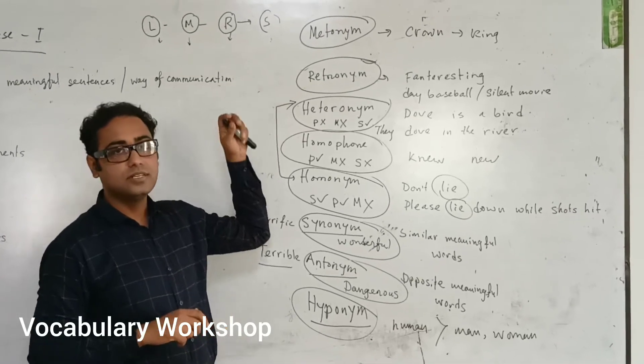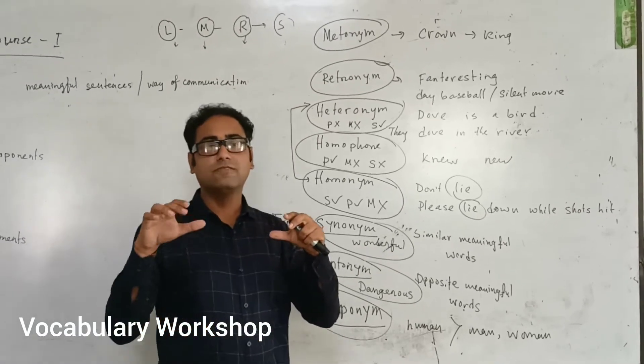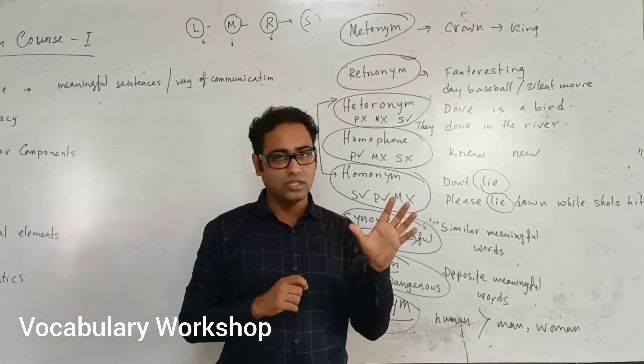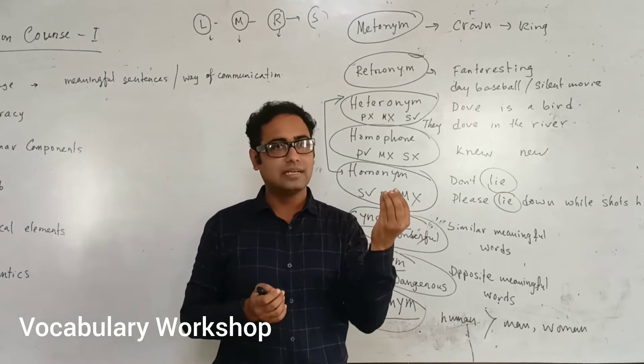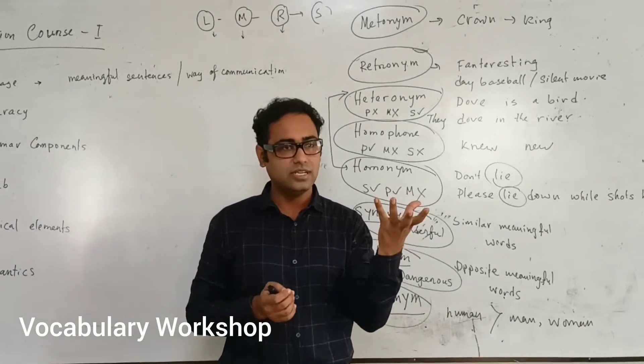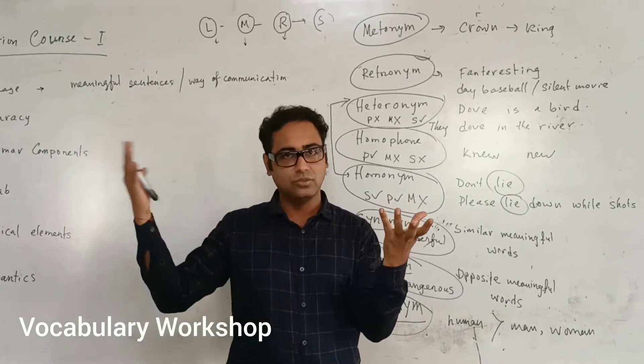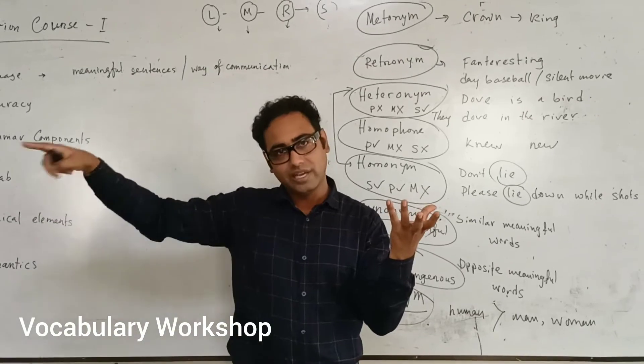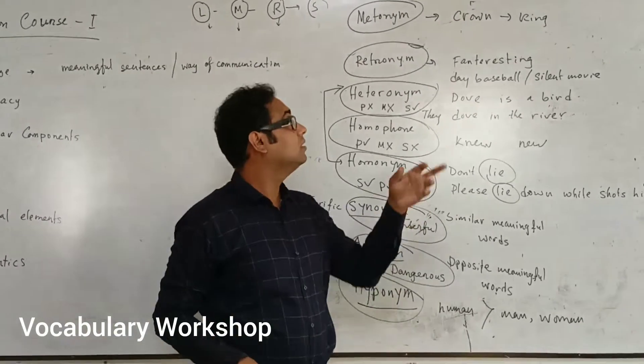Metronym means part for the whole — when you describe one thing to represent the whole thing. For example, 'crown' is referring back to the king and the whole kingdom as well.